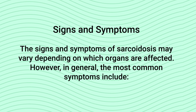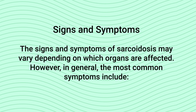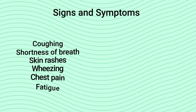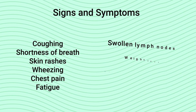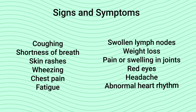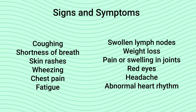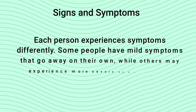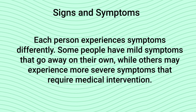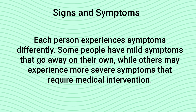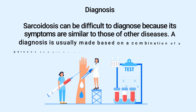Next up are the signs and symptoms. The signs and symptoms of sarcoidosis may vary depending on which organs are affected. However, the most common symptoms include coughing, shortness of breath, skin rashes, wheezing, chest pain, fatigue, swollen lymph nodes, weight loss, pain or swelling in joints, red eyes, headache, and an abnormal heart rhythm.